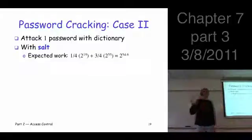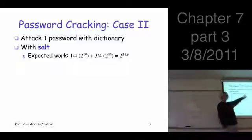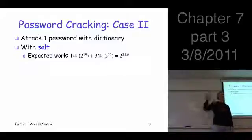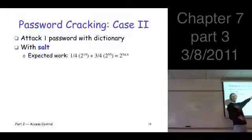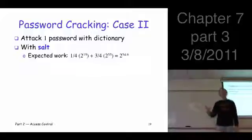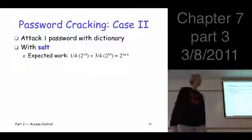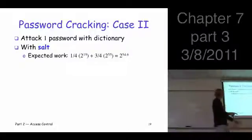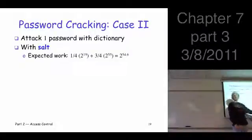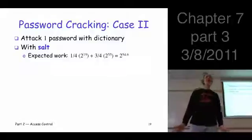How much work is that? There's a chance it's in your dictionary. There's a one-fourth probability it's in the dictionary. If it is, how many hashes do you compute? You go through about half of them before you expect to find it. There's 2 to the 20, half of that is 2 to the 19. If it's not in your dictionary, that's three-fourths probability. You have to do the exhaustive search, so you're doing the 2 to the 55 before you expect to find it.